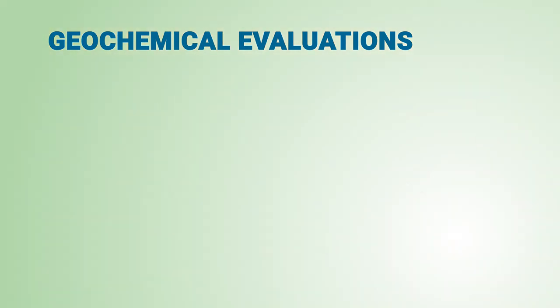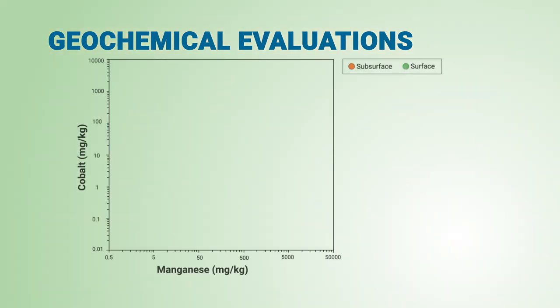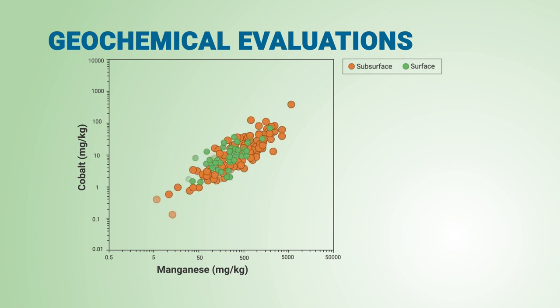A geochemical evaluation was conducted to examine whether this outlier cobalt concentration had a natural source and was really part of the background population. Soils in this area contain lots of naturally occurring manganese oxide minerals. Manganese oxides have a strong affinity to adsorb specific trace elements such as cobalt and barium.